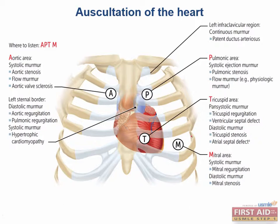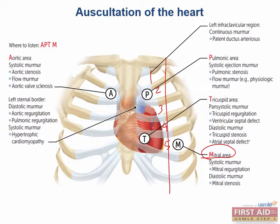A commonly tested example is if a murmur is heard near the mid-clavicular line in the fifth intercostal space — counting 1, 2, 3, 4, 5. Which valve are we listening for here? We're talking about the mitral area.